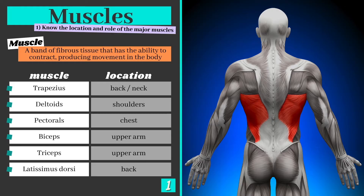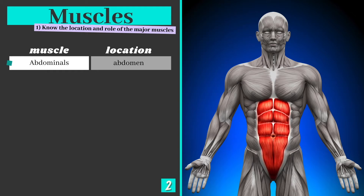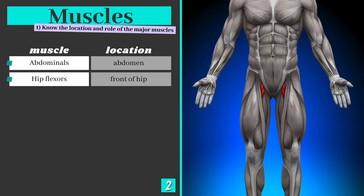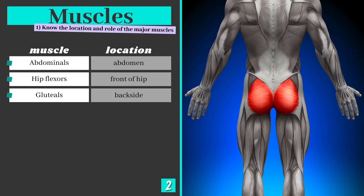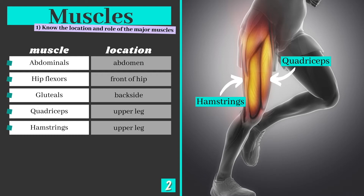Like the trapezius, the latissimus dorsi is also a back muscle. It spans the middle and lower sections of the back and the whole width of the body. The abdominals or abs cover the abdomen or core — they're comprised of the central rectus abdominis muscles and the obliques just outside them. The hip flexors span the hip joint at the front from the spine and pelvis to the femur below. Your gluteals, or backside muscles, sit directly behind. The quadriceps and hamstrings are your thigh muscles.